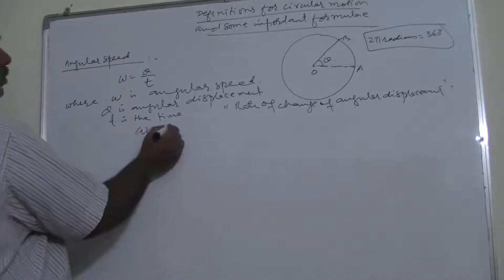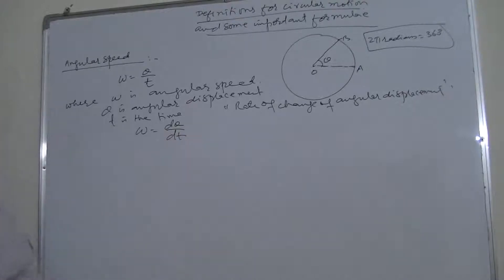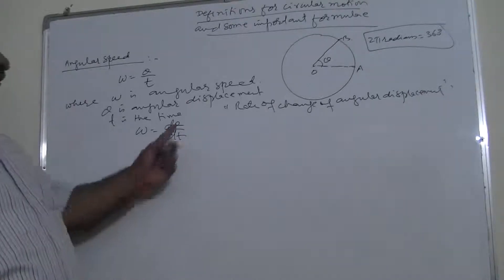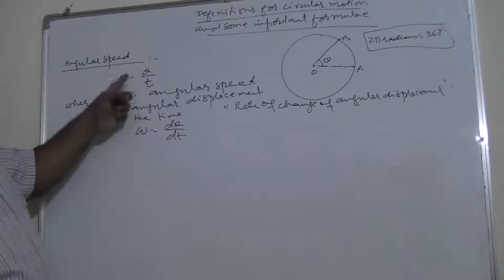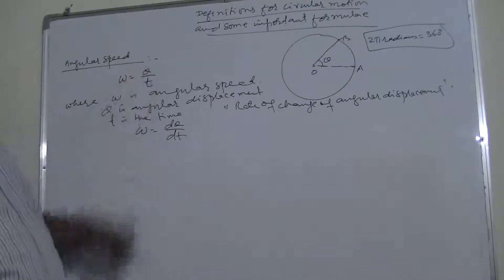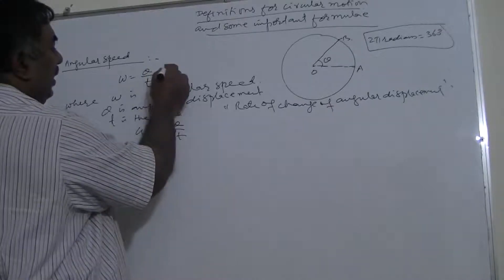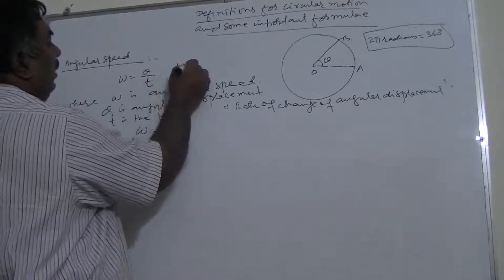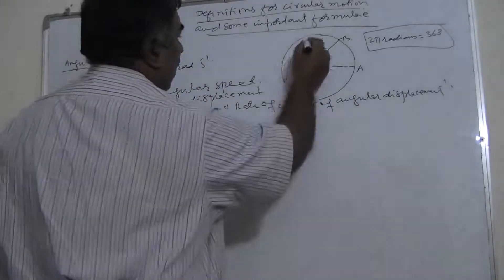Calculus is not in our course, but the more precise definition is omega equals dθ/dt — omega is the differential coefficient of angular displacement with respect to time. In A-level, we simply define omega as θ/t, where theta is the angular displacement and t is the time. The SI unit is radians per second, since theta is in radians.